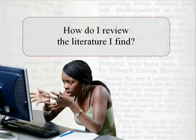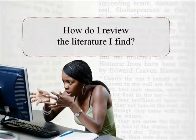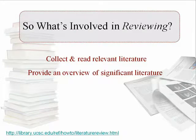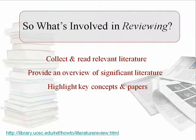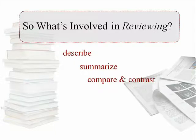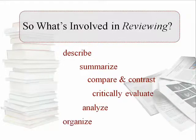At this point, you might be wondering: how do I actually review the literature I find? In the most general sense, it means that you collect and read all the relevant papers and other literature on your topic. You want to provide an overview, but also highlight key concepts and important papers. As you read, you may start by describing and summarizing each article. Then you can start to make connections by comparing and contrasting those papers. You will also need to evaluate, analyze, and organize the information from your reading.